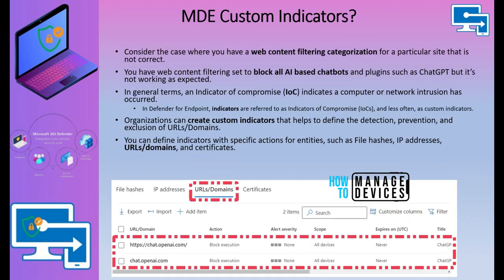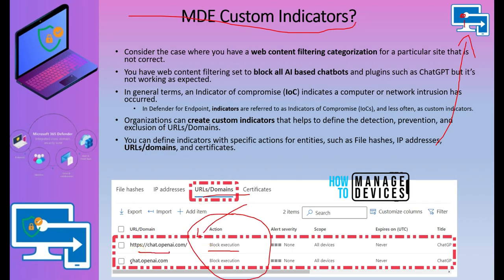If web filtering categories are not working for some websites such as ChatGPT, you can use custom indicators in Microsoft Defender for Endpoint. This has been explained in detail in a previous video — click the info button on YouTube to find it. You can add URLs and domains to block access to specific websites. This is only needed if the categorization of a website is not working as expected.